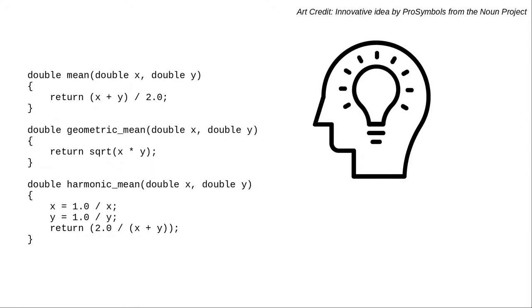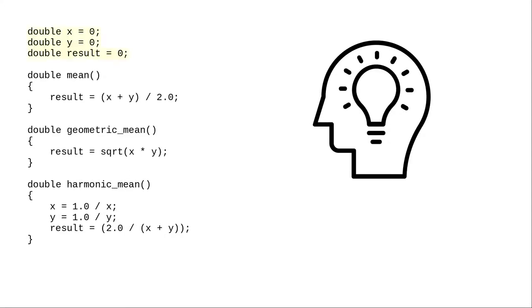Then they learn about global variables and they think, hey, I can get rid of the parameters and return statements and make everything global. There! Now I don't have to deal with all that confusing stuff.